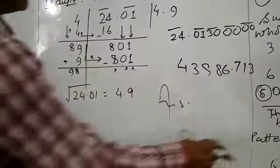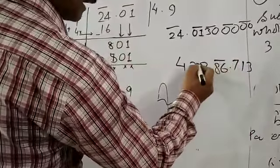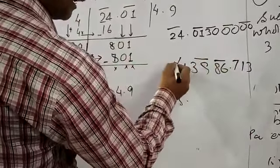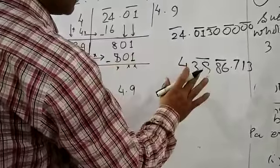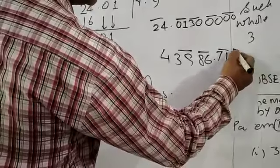So, this will be 4, 3, 9, 2, 8, 6, and 7, 1, 3. Now, what do you want to do? You want to make a pair. So, you want to make a pair here. 8, 6, here. This is single. So, you want to make a pair here. If you want to make a pair here, you want to make a pair here.